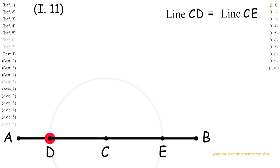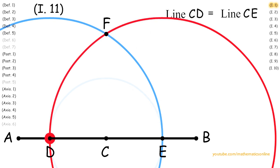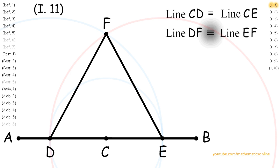Next on line DE, we apply Proposition 1 to create a perfect equilateral triangle. Therefore, line DF is congruent to line EF.